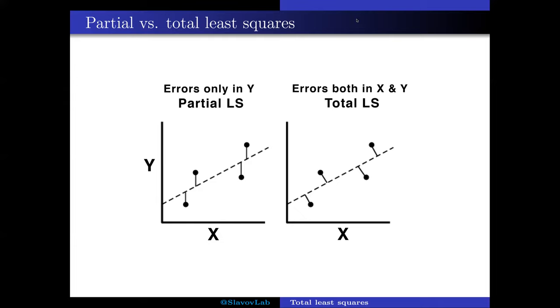This problem is known as partial least squares, and it's the ordinary regression that many of you are perhaps familiar with. Why is it partial?